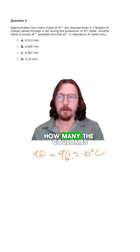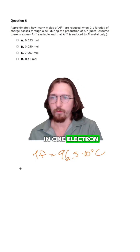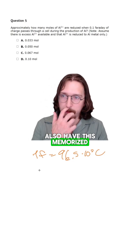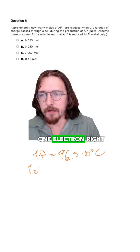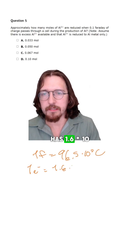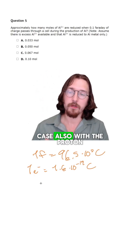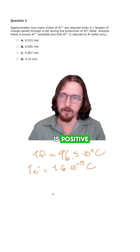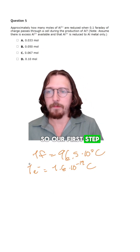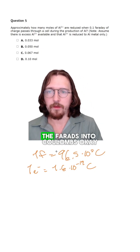How many coulombs of charge are carried in one electron? We have to have this memorized. This is the elementary charge, which is that one electron has 1.6 times 10 to the negative 19 coulombs of charge. This is the case also with a proton, except the electron is negative and the proton is positive.